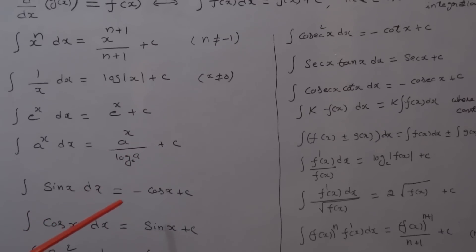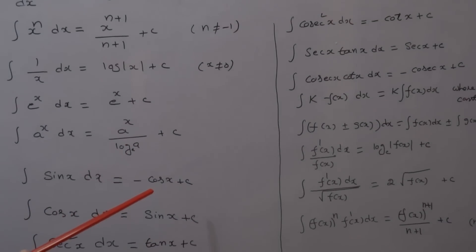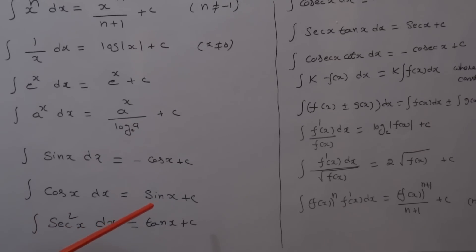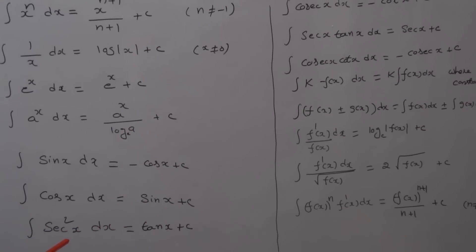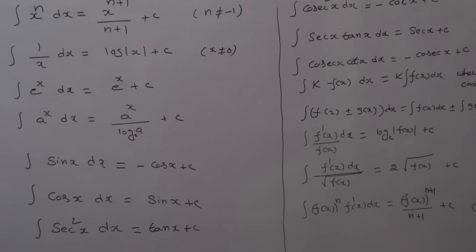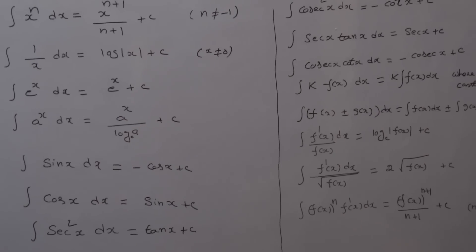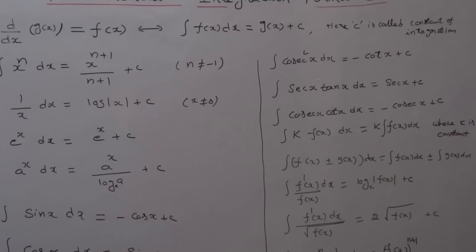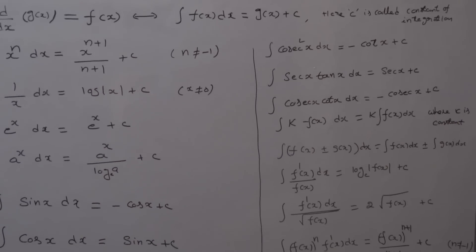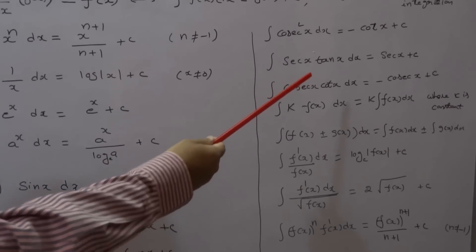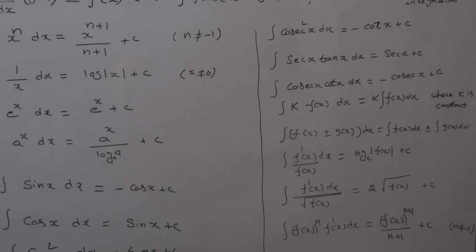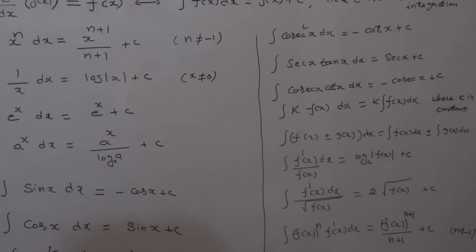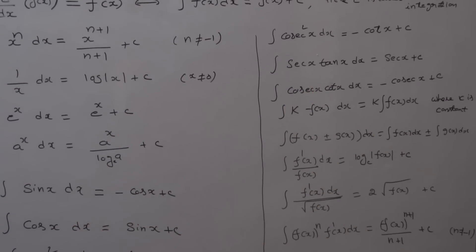Integral of sin x dx is equal to minus cos x plus c. Integral of cos x dx is equal to sin x plus c. Integral of sec² x dx is equal to tan x plus c. Integral of cosec² x dx is equal to minus cot x plus c. Integral of sec x tan x dx is equal to sec x plus c. Integral of cosec x cot x dx is equal to minus cosec x plus c.